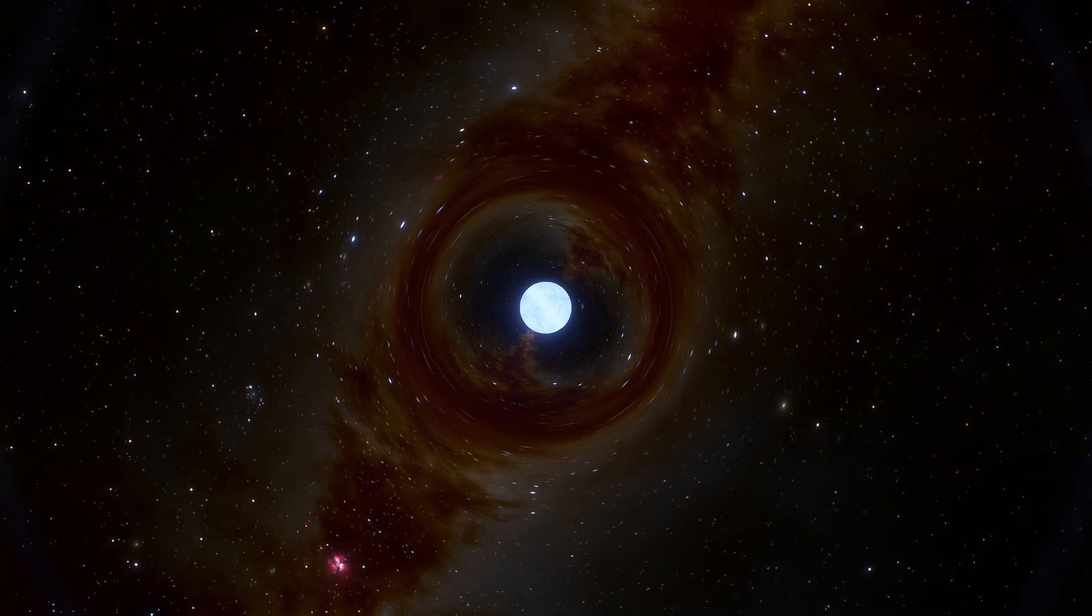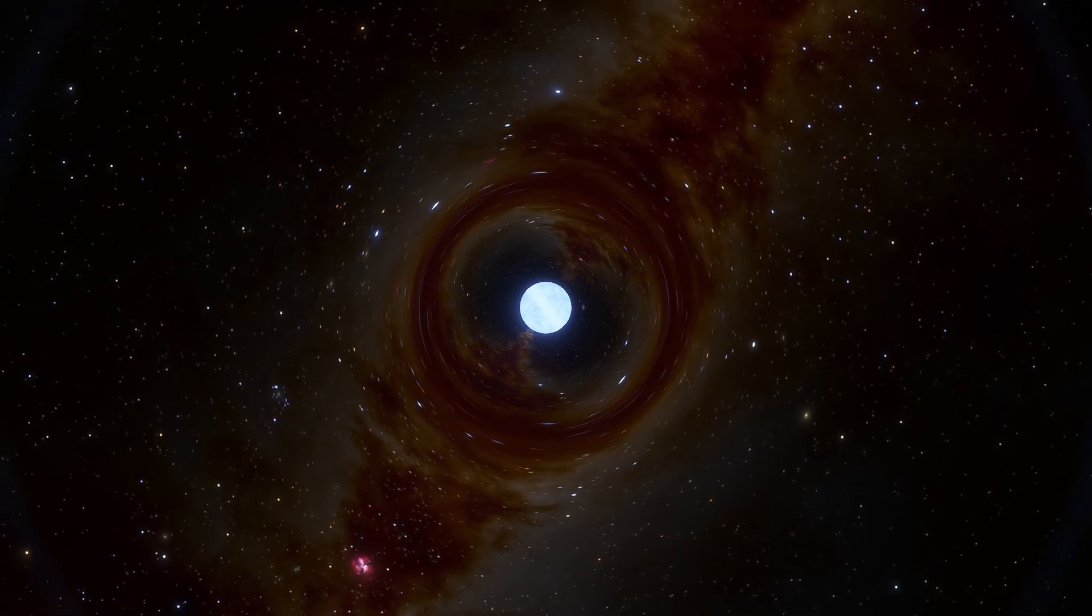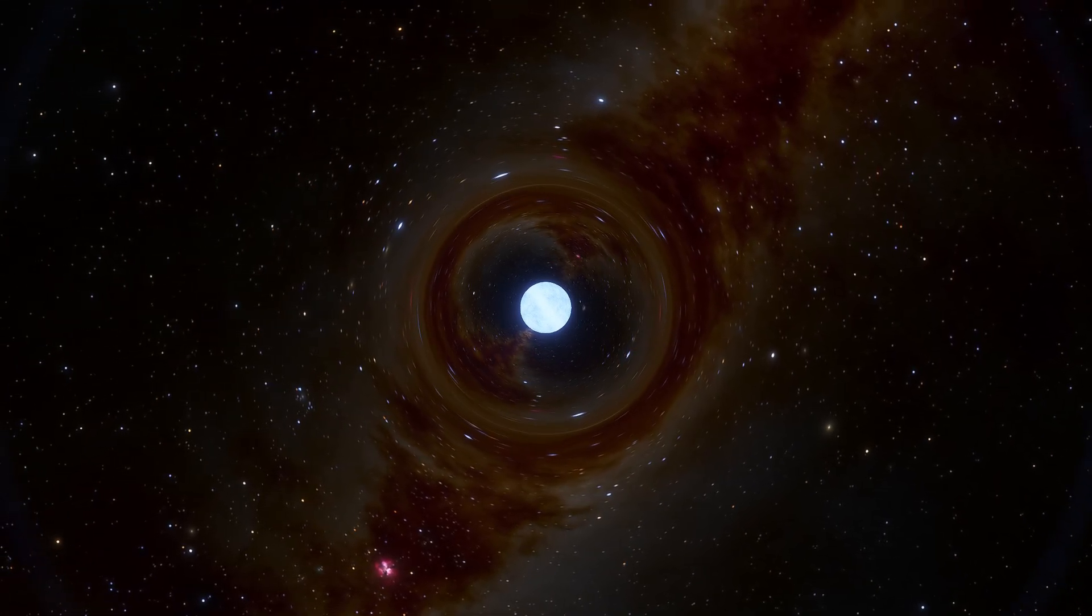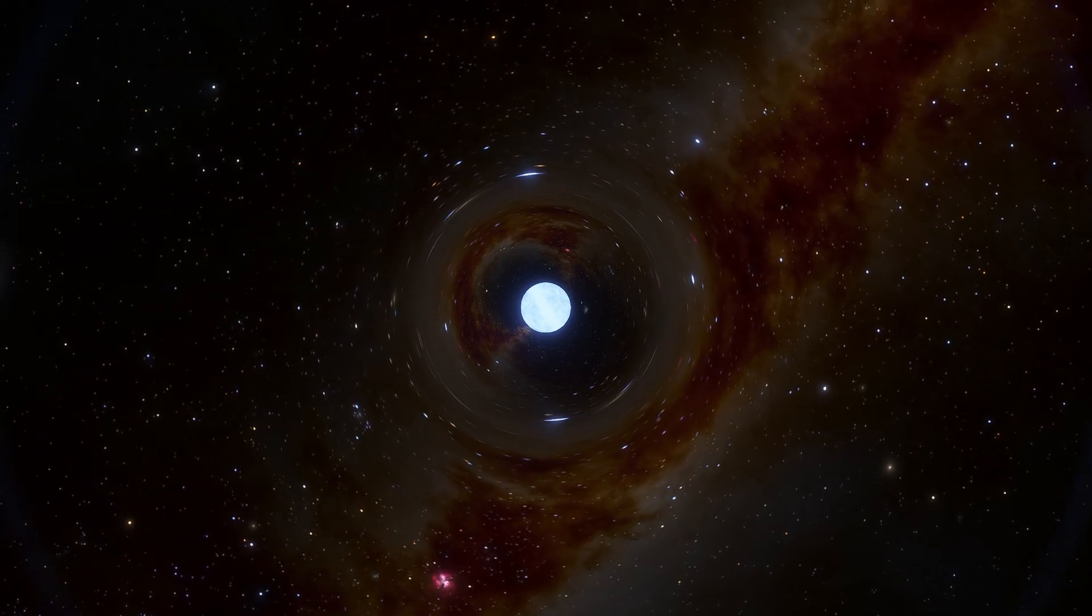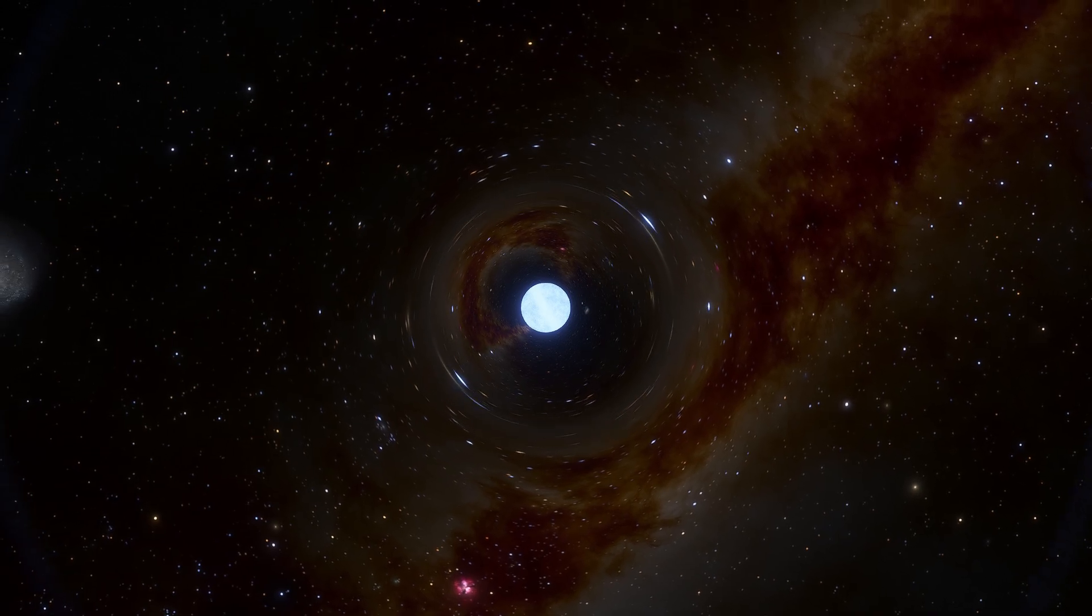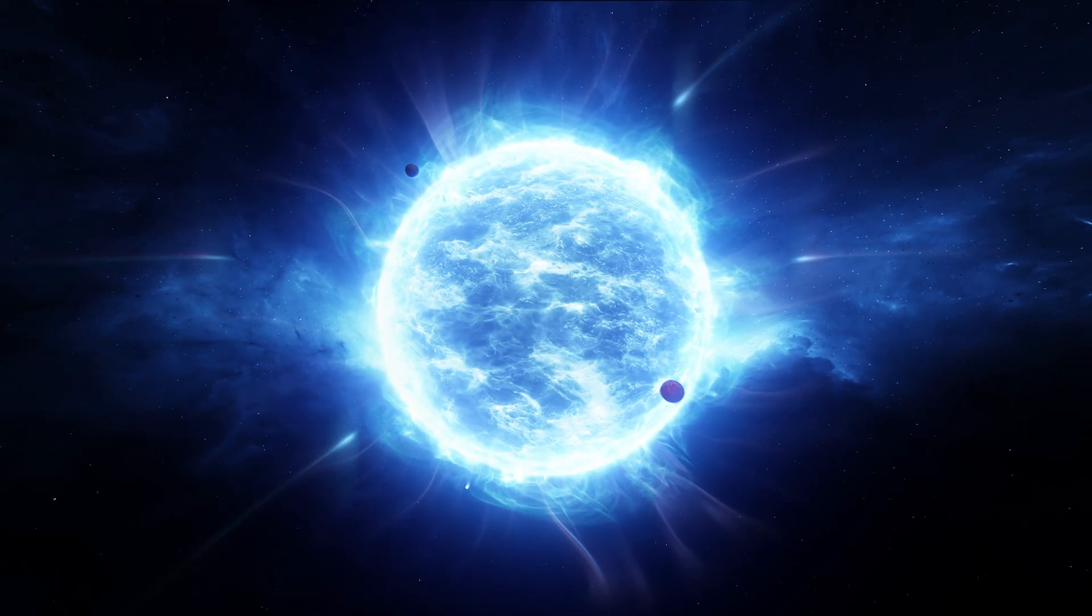If you could somehow stand on the surface of a neutron star, assuming you could survive the crushing gravity, you'd experience time moving slower than it does on Earth, though not as dramatically as near a black hole.